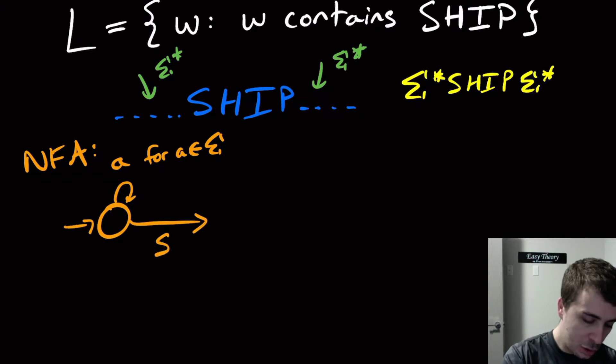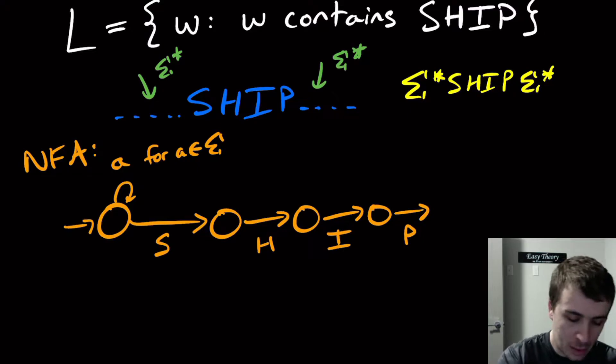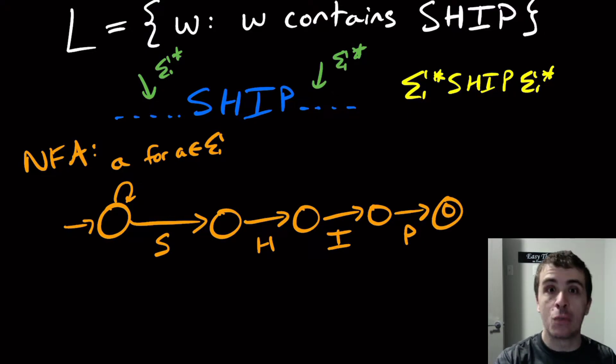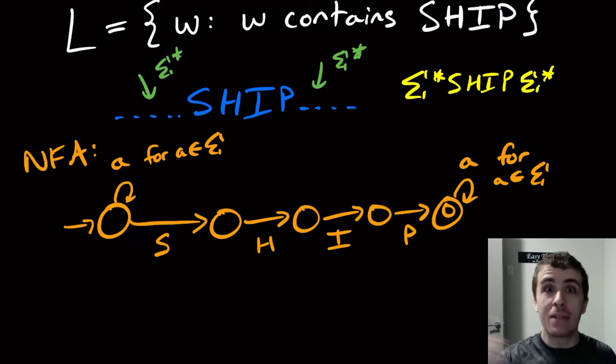And then we have the letters SHIP in that order by doing a bunch of transitions in the middle—in this case four, because there are four characters. And then at the end we can have anything after it, so here we're going to have again a for a in Sigma.